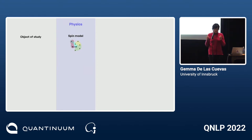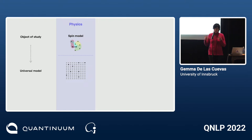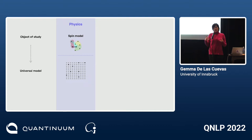What goes on there essentially is the following: you have an object of study — a spin model defined on a hypergraph — and this is transformed onto a model defined on more particles, with plenty of auxiliary variables but with simpler interactions, simpler building blocks. By fixing the parameters of these additional particles and coupling strengths, this universal model can simulate the first one — and simulate means something like reproduce the low energy behavior; it essentially mimics the first model.